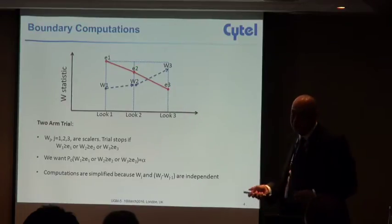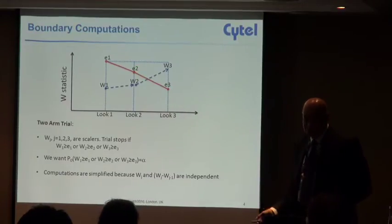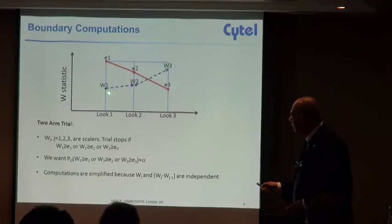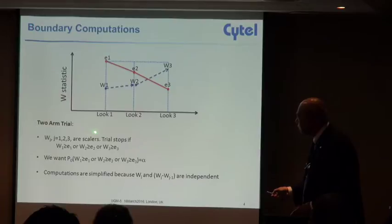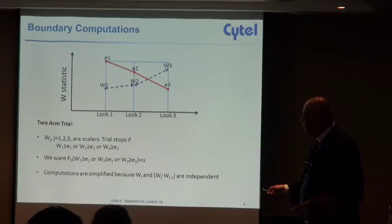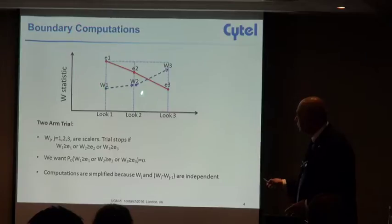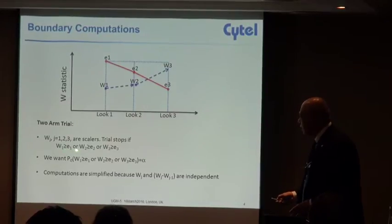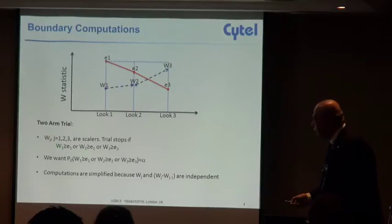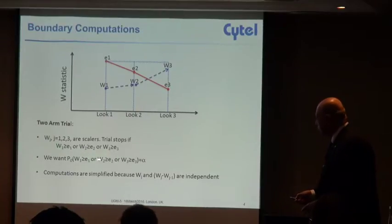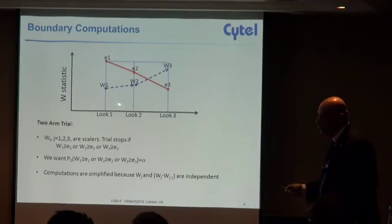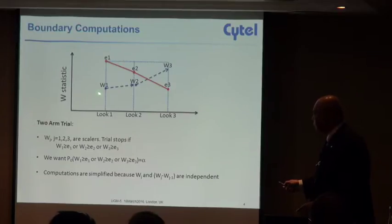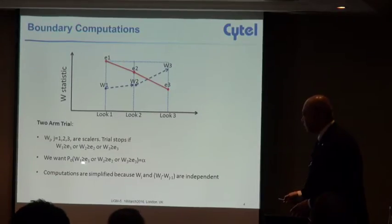Here is a picture of the two arm case where these E1, E2, and E3 are the boundaries that you really want to know. At each look you're getting a W1, W2, and W3, and any time you cross this you stop and declare victory. The main thing in a two arm trial is that these W's are scalars and the trial stops the first time that one of these W's crosses the boundary. What we want is that the probability of at least once crossing this boundary is alpha.